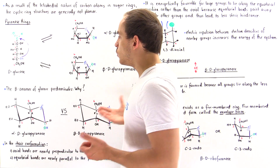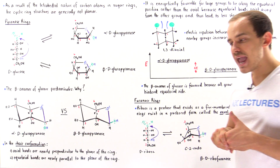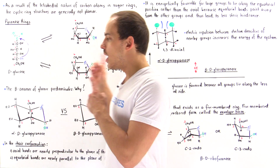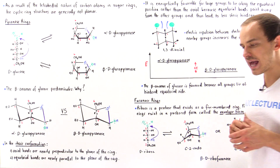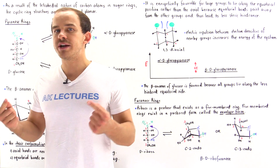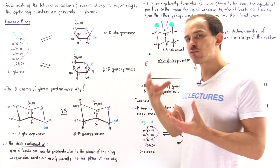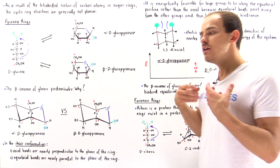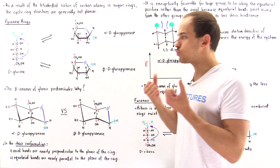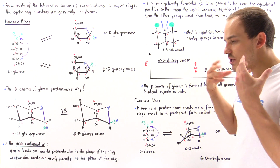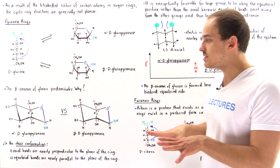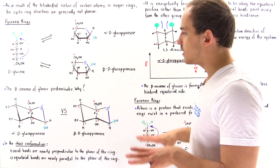The answer lies in examining the chair conformation of these two molecules. Remember from organic chemistry that any time we have a six-membered ring — a ring structure containing six atoms — that ring structure will take on the chair conformation, because it is the most stable arrangement of atoms. All atoms in the chair conformation are as far away from one another as possible, which decreases the energy of that conformation.